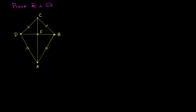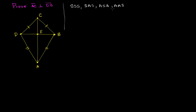Here's our toolkit of congruence postulates. We have the side-side-side postulate: if the three sides are congruent, then the two triangles are congruent. We have side-angle-side: two sides and the angle in between are congruent, then the two triangles are congruent. We have ASA: two angles with a side in between. And then we have AAS: two angles and then a side. These are our postulates — we assume that they imply congruency.